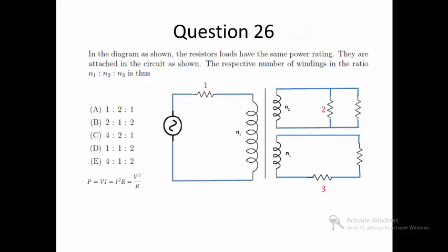Recall power is the product of voltage and current, but we can express it as I squared R because V equals IR. We can also express it as V squared over R because I equals V over R.